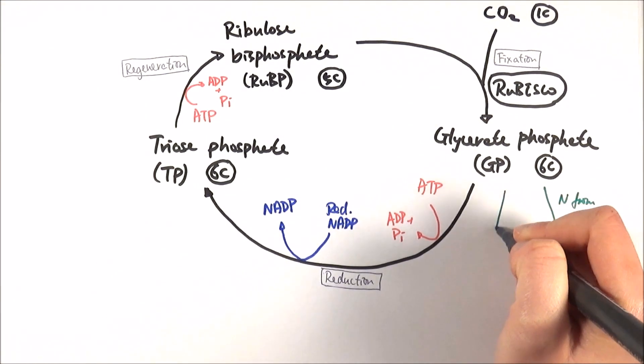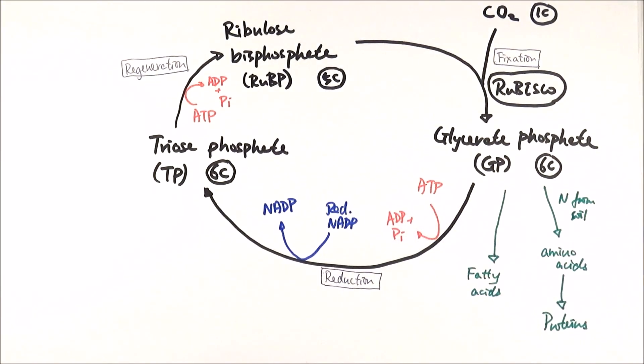GP can also be converted into fatty acids. And fatty acids is one of the components to make lipids. And the other component, which is glycerol, comes from triose phosphate.